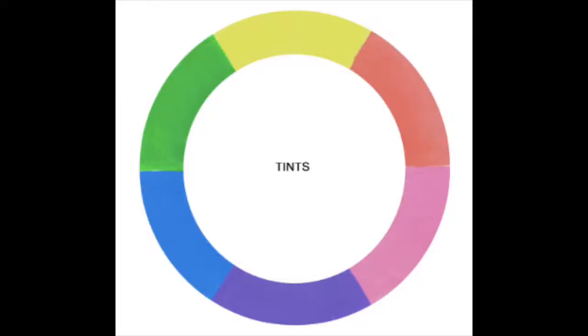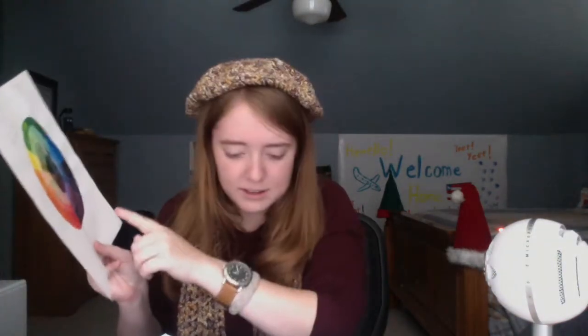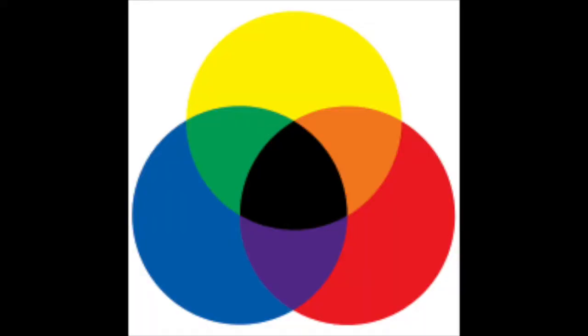Tint means your base color mixed with white. Primary colors — you've probably learned this in elementary school — are yellow, red, and blue. They're called primary colors because they're the colors you can get and mix with everything basically. For example, you take yellow and red and you get orange. These primary colors can make every other color, so that's why they're your go-to colors.